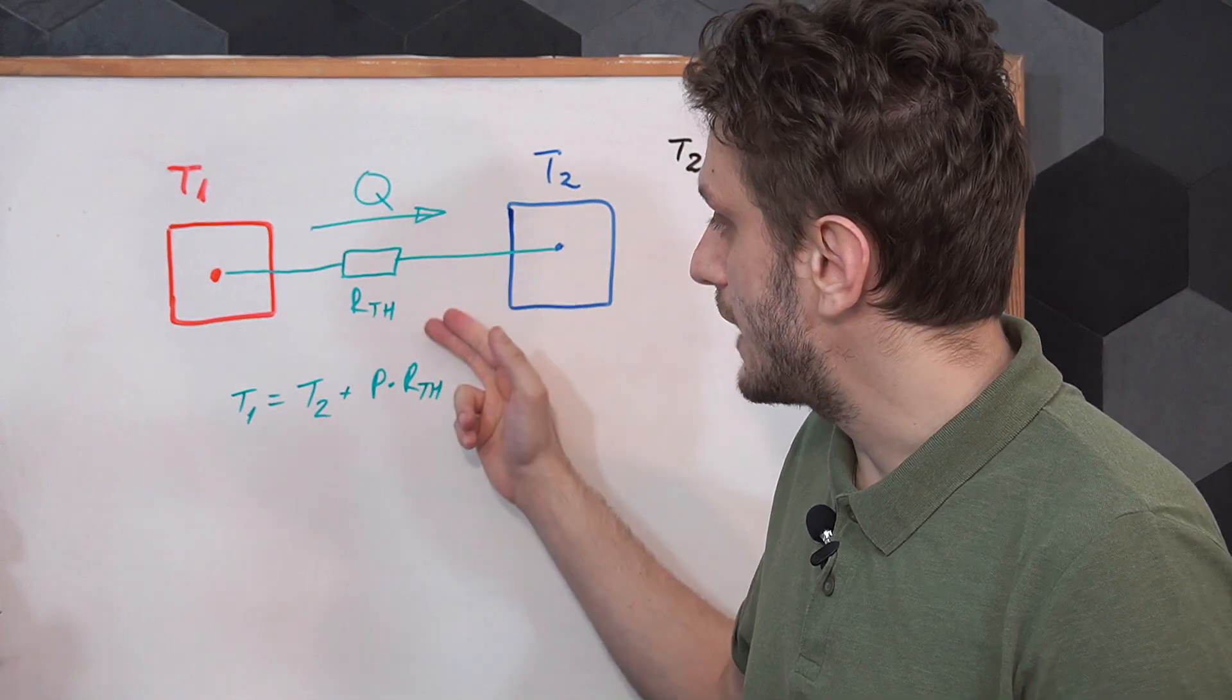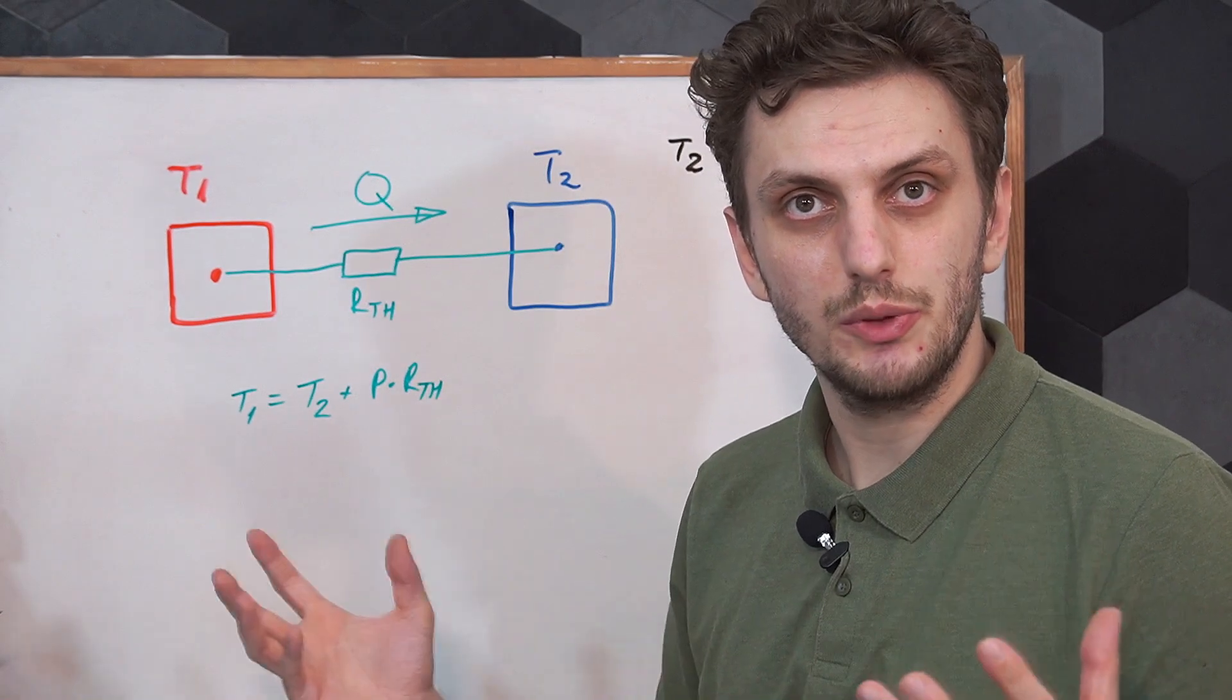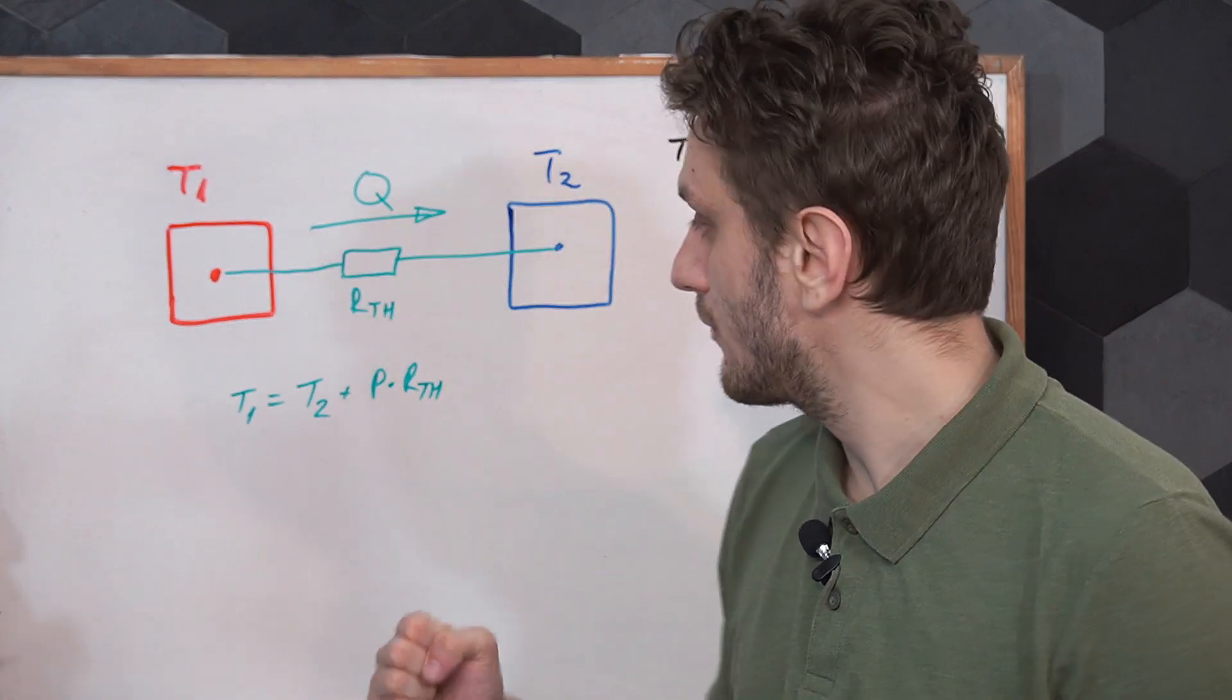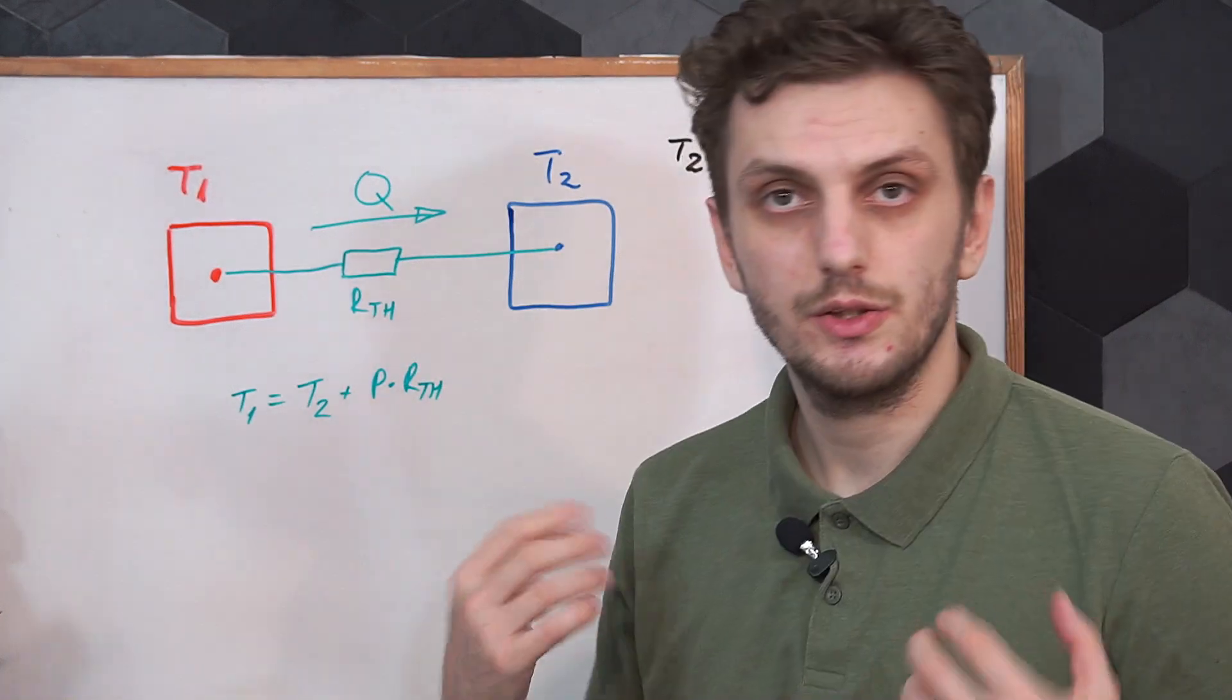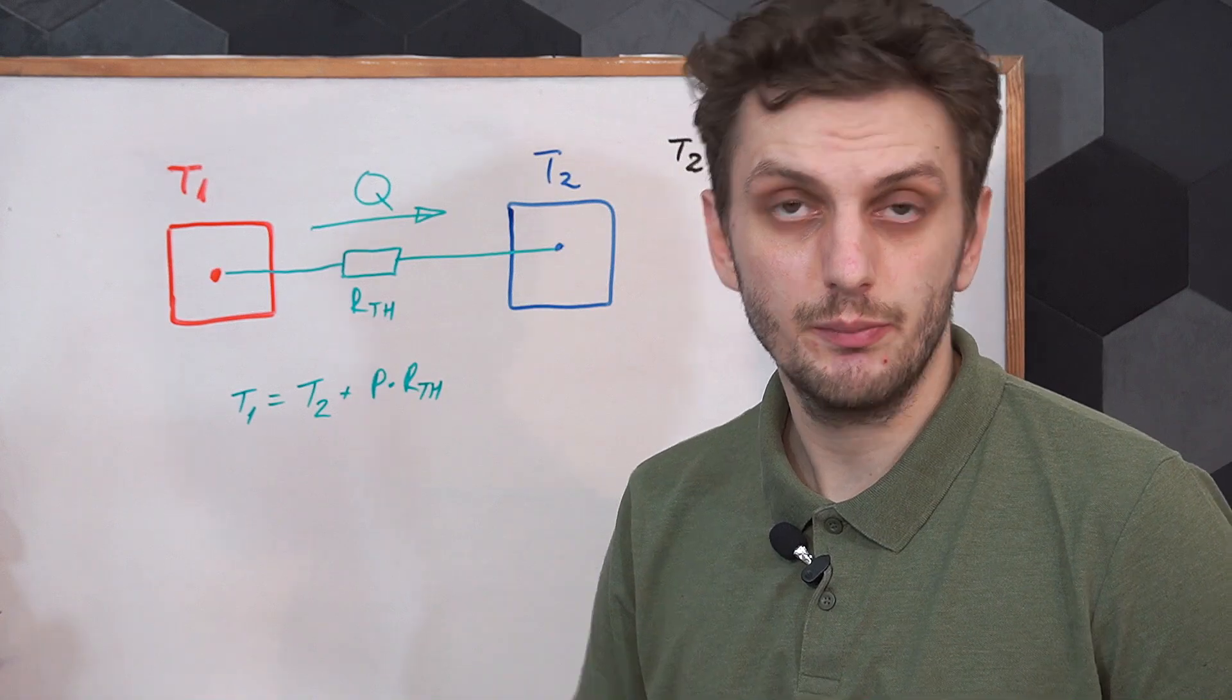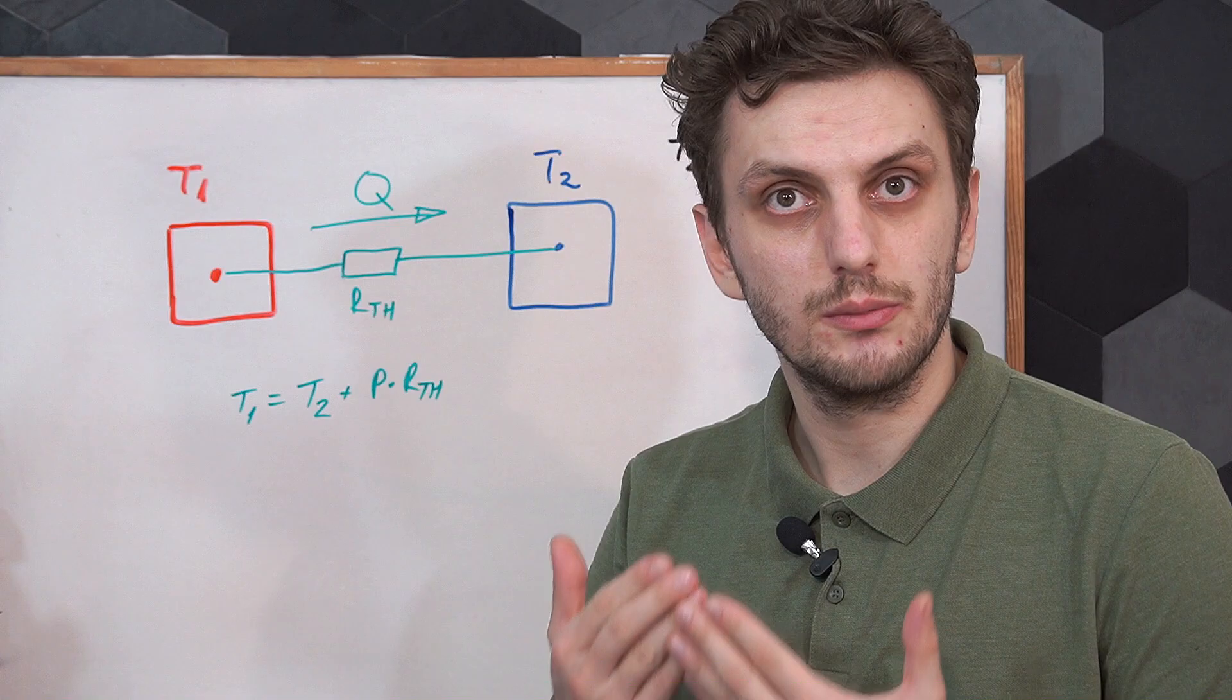But one more important parameter here is the thermal resistance between the two bodies. And the exact value of this can be modified. So this depends on the thermal interface between the two components. So to get better cooling you will need a small thermal resistance or in other words you will need good heat exchange between the two bodies.